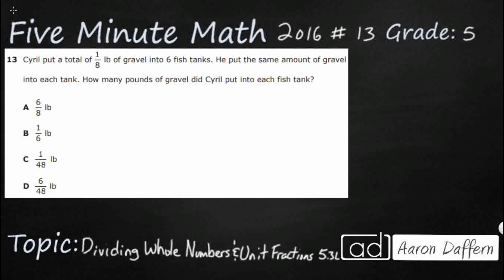So Cyril put a total of one-eighth pound of gravel, that's not very much, into six fish tanks, same amount. So we've got equal groups. Equal groups lets me know that we're going to be looking at multiplication or division. We want to know how many pounds of gravel Cyril put into each fish tank.